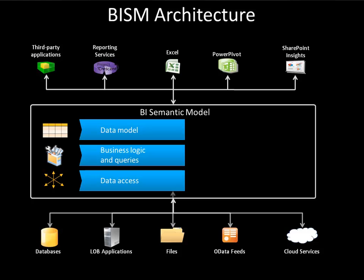At the bottom of this architecture we have the source of the data — what we're calling our data access. The BISM is designed so that we can pull data out of relational databases as well as basic transactions, files, and web services, and pull this all together into the model for our users. That's powerful because typically we give users access to databases, but then they have to worry about bringing in all these other ancillary things that aren't in the database themselves. BISM lets us do that for them.